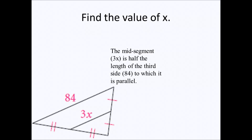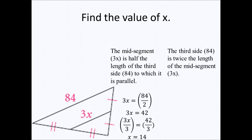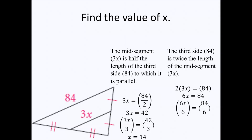Find the value of X. First approach: the mid-segment 3X is half the length of the third side 84, so 3X equals 84 divided by two, which is 42. Dividing both sides by three: 3X divided by three equals 42 divided by three, so X equals 14. Second approach: the third side 84 is twice the length of the mid-segment 3X, so 2 times 3X equals 84, which gives 6X equals 84. Dividing both sides by six: X equals 14.